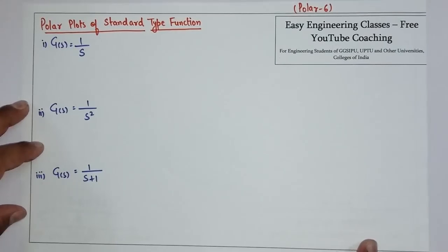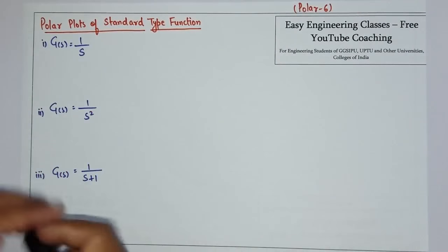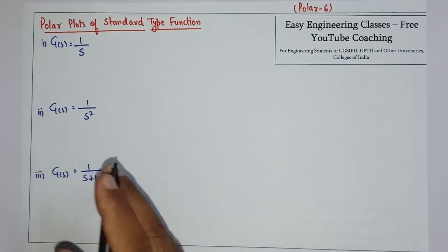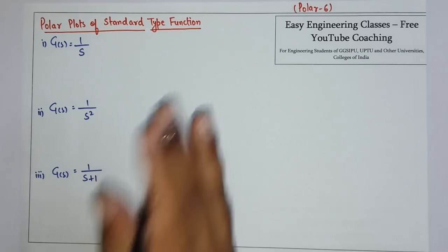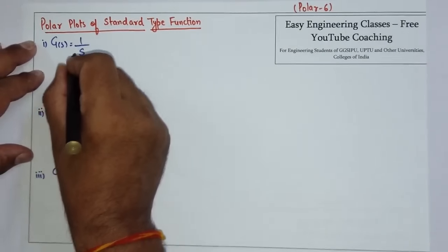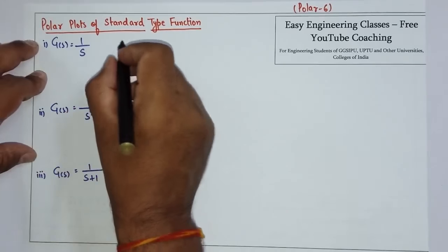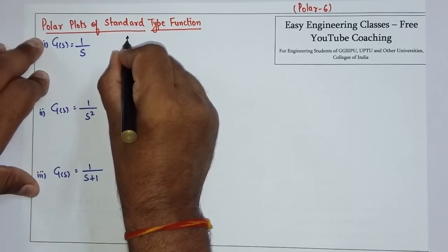Hello everyone, in this very short video I am going to show some of the standard polar plots of functions. So if I have a function G of s equals 1 over s, this polar plot will be something like this.